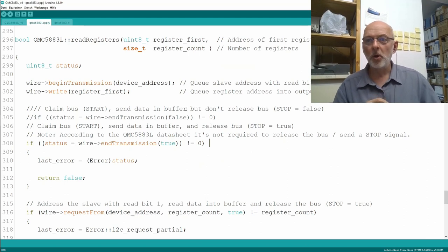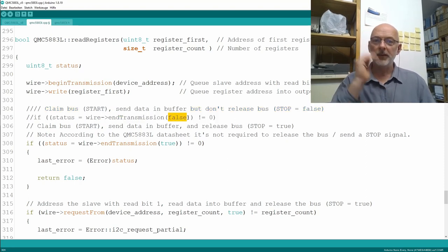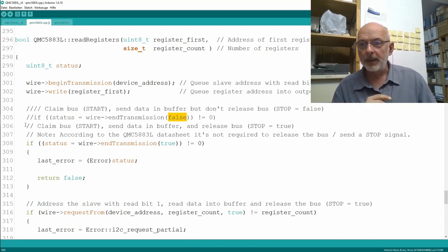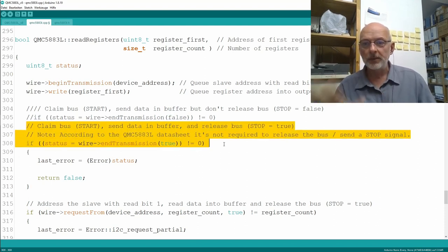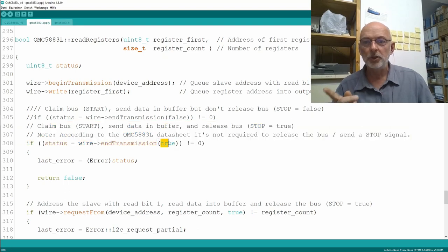I changed my code in the read register method accordingly. That's the old version where end transmission gets as a parameter false, so it doesn't release the bus and doesn't send a stop signal. That's the new version where end transmission gets as a parameter true, so it releases the bus and sends that stop signal. Now let's have a look at the serial monitor.